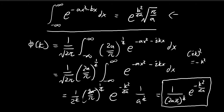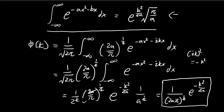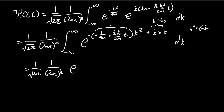Comparing with the standard formula, this whole term — (1/(4a) + iℏt/(2m)) — corresponds to 'a' in the integral. For the other term, we have +ikx, so leaving k at the back since we're integrating in dk, the ix here corresponds to our b. Actually this is equal to −ix for b. So in order to solve this integral, we can substitute directly into the formula. We have e to the power of b², and b² = (−ix)² = −x². So we have −x² divided by 4 times this full 'a' term.